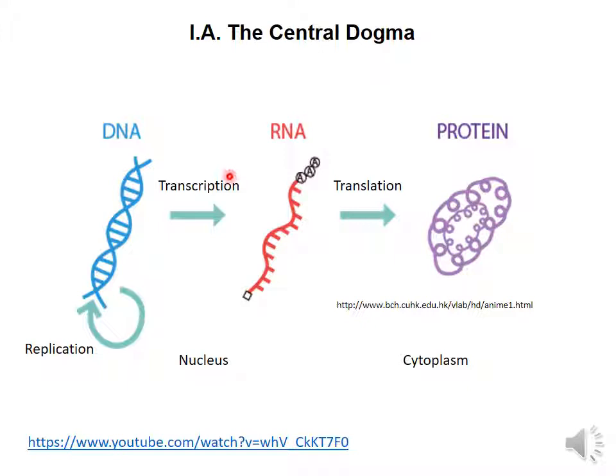The second step is transcription. Transcription is when we take the information encoded in the DNA sequence and it is essentially transformed into a single-strand RNA molecule that contains the same information — this is what we call the messenger RNA. Messenger RNAs leave the nucleus and go to the cytoplasm, where ribosomes interact with it and translate the RNA into a protein.